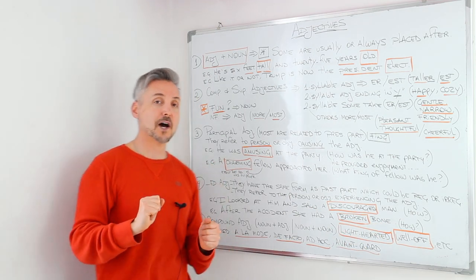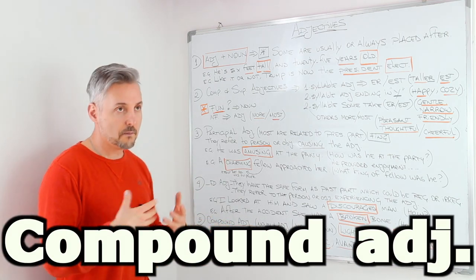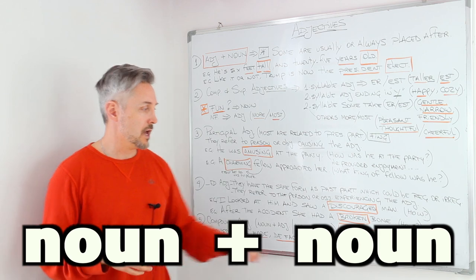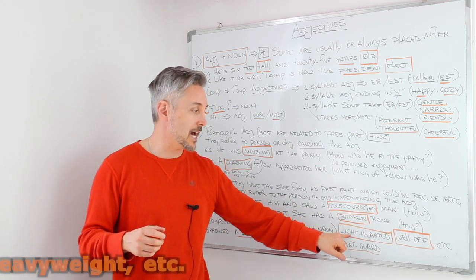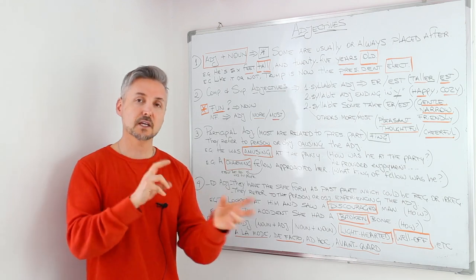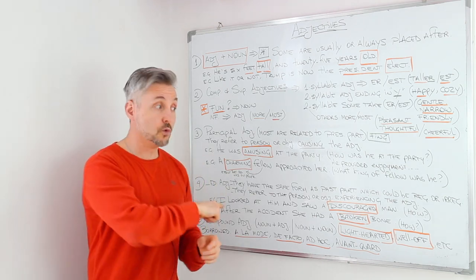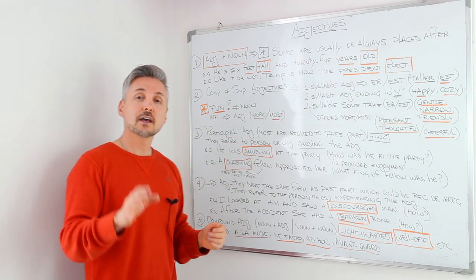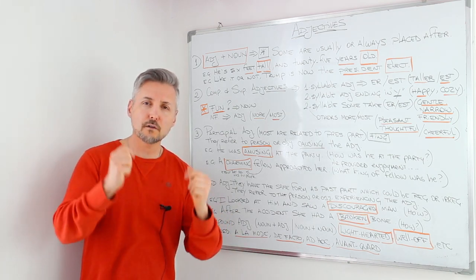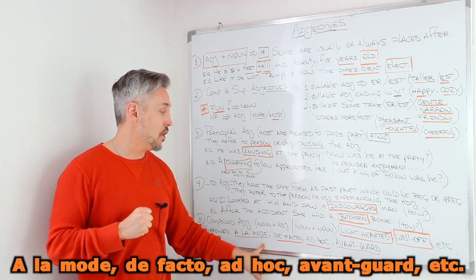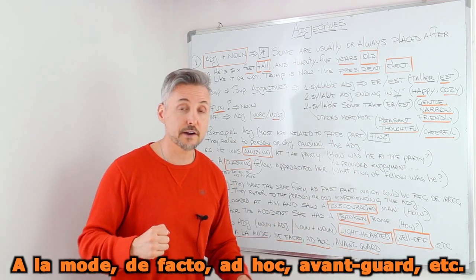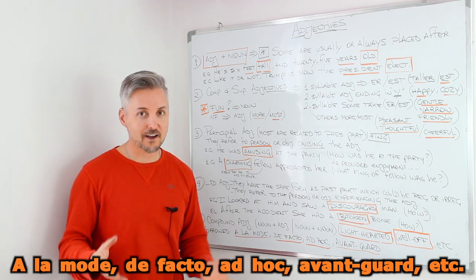The last point that I want to talk about is compound adjectives. And compound adjectives are, for example, noun plus adjective or noun plus noun, etc. I gave you two examples like light-hearted or well-off. These are adjectives that are called compound adjectives because they are put together. If you want to watch a lesson on this, you can click here. Now, these compound adjectives can be borrowed from other languages. So, just like a la mode from French, right? Or de facto from Latin or ad hoc from Latin or avant-garde from French. So, there are a lot of them, okay?